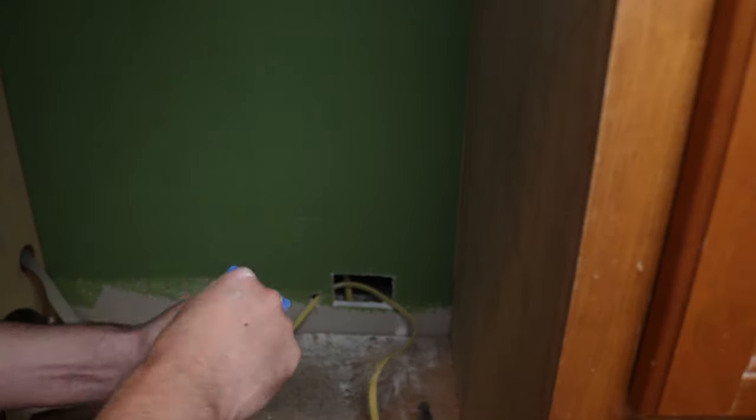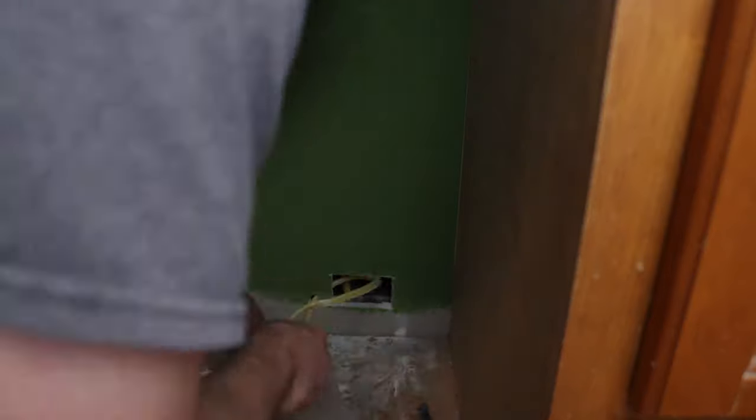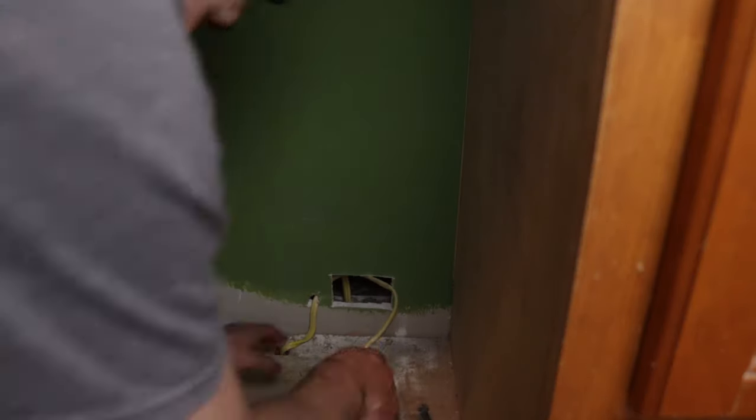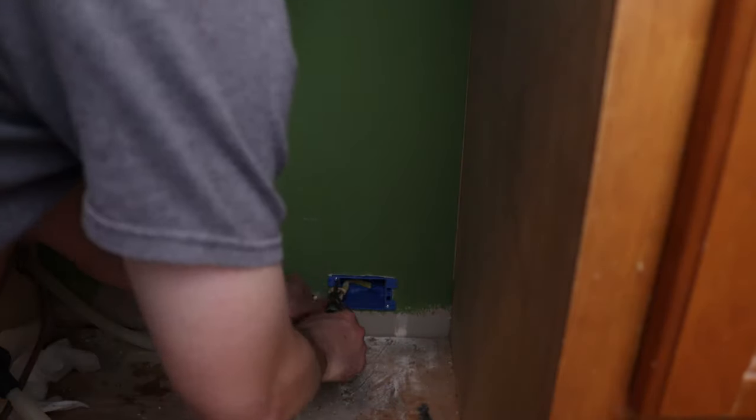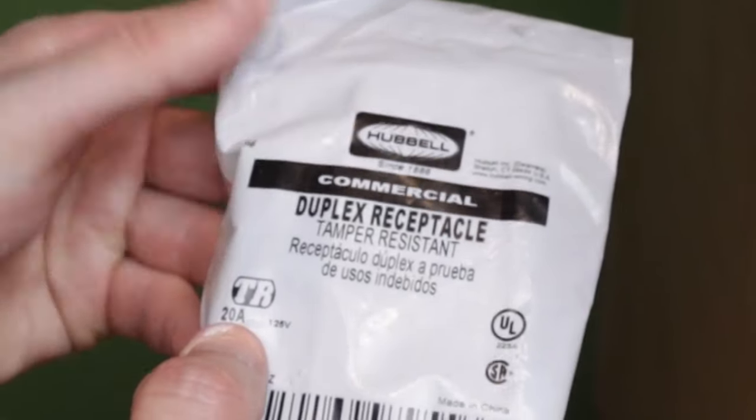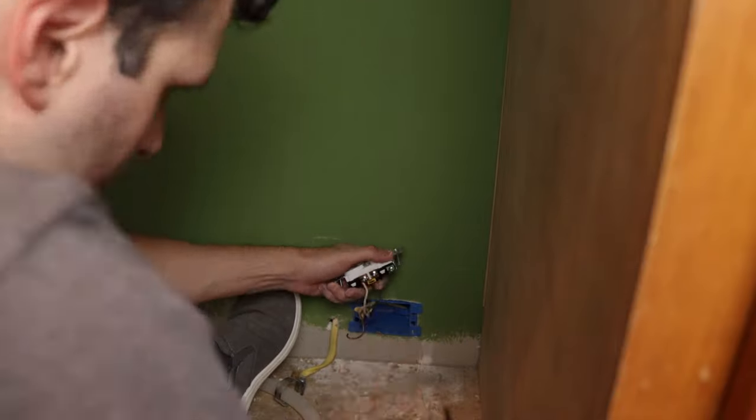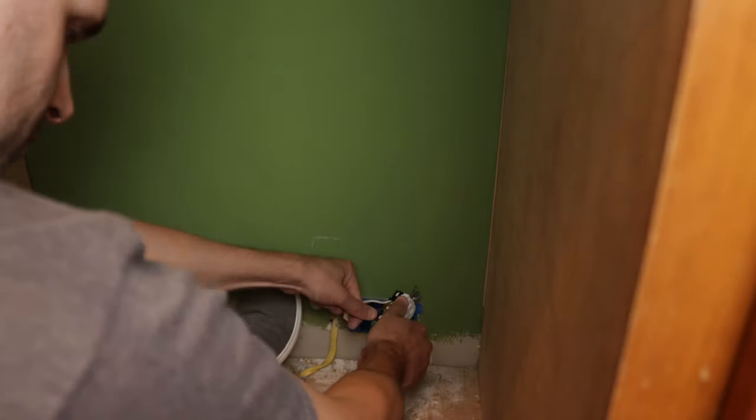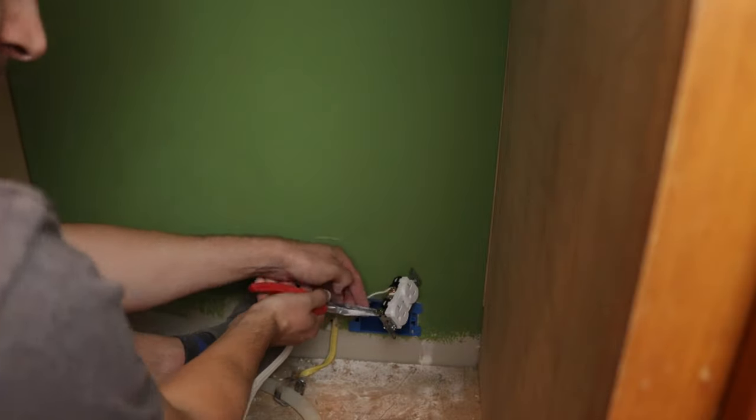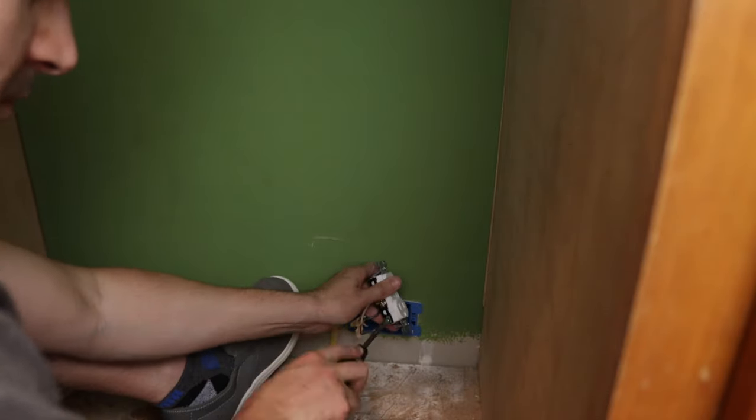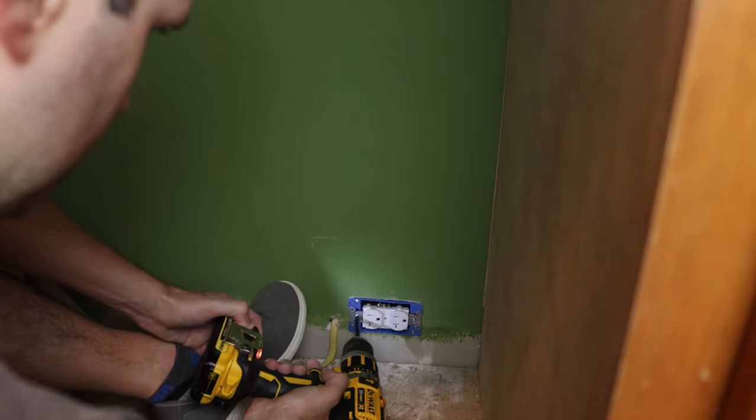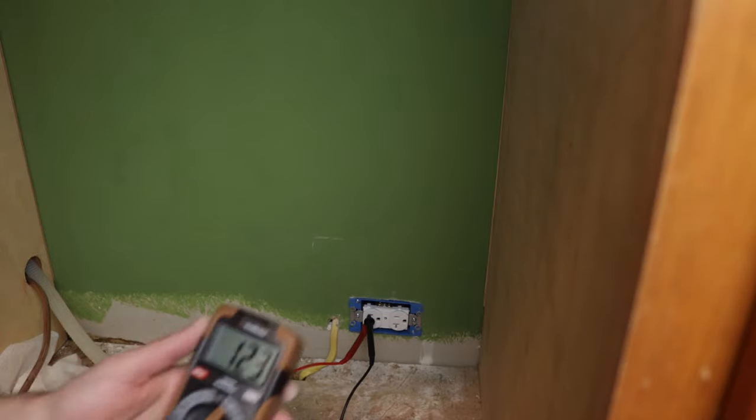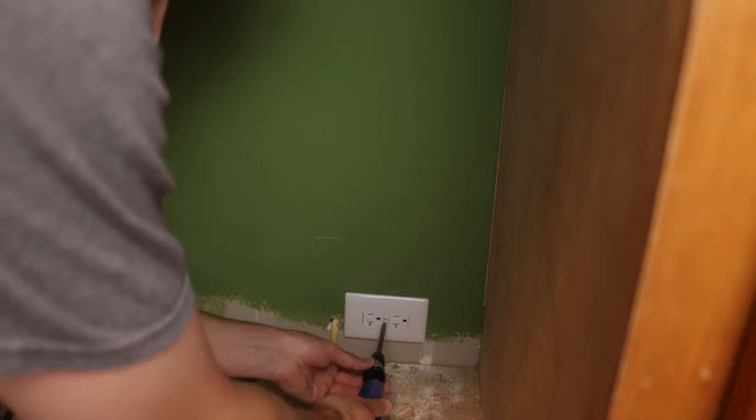Since the dishwasher is on a 20 amp breaker, we'll go ahead and install a 20 amp plug. When we're done installing the plug, we'll turn the breaker back on and we'll give it a test. And here you can see there's 122 volts in the plug, so the plug is good.